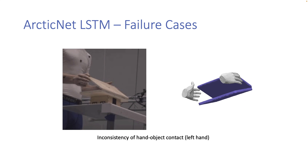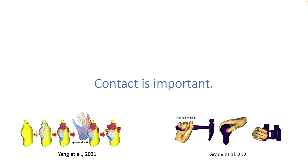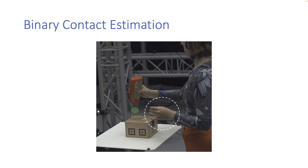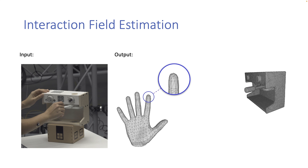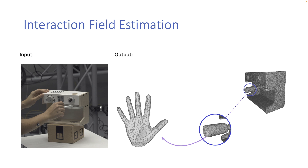This indicates that our dataset is very challenging and there is sufficient room for future work. Contact is important for modeling hand-object interaction. When two hands interact with an object, our hands are not always in contact with the object, but can be near. To capture the relative hand-object positions even when not in contact, we introduce the task of interaction field estimation. For each vertex of a hand, the task is to estimate its shortest distance to the object. Similarly, for each object vertex, we also estimate its shortest distance to the hand.